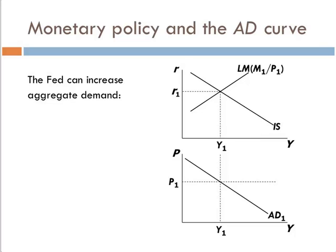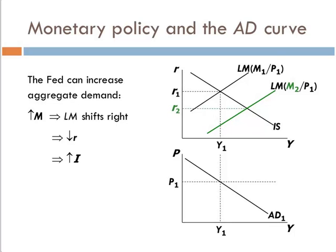How does monetary policy affect the aggregate demand curve? Monetary policy shifts the LM curve. The Fed can increase aggregate demand by increasing the money stock. If they increase the money stock, they shift the LM curve to the right. Interest rates go down, investment goes up, and Y goes up, but it's at the same price level. We're down here at this new income level, but at the same price level. What's the only way that happens is if we have a shift in the aggregate demand curve.